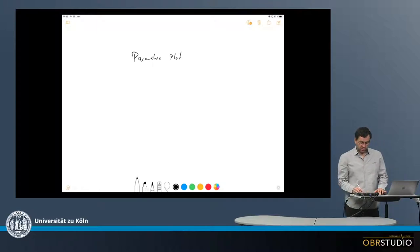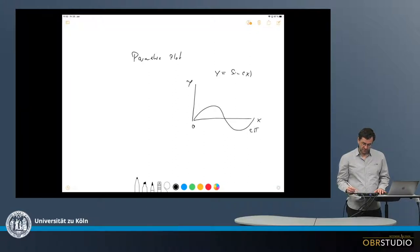In a normal plot, something like y equals sine of x, this will look like the following. So this is the x-axis, the y-axis, and then the sine looks something like this, from 0 to 2π.